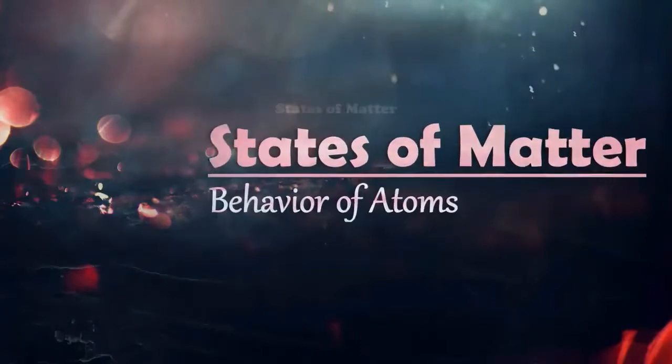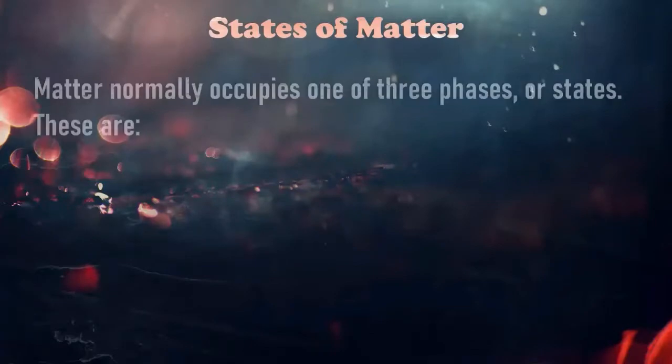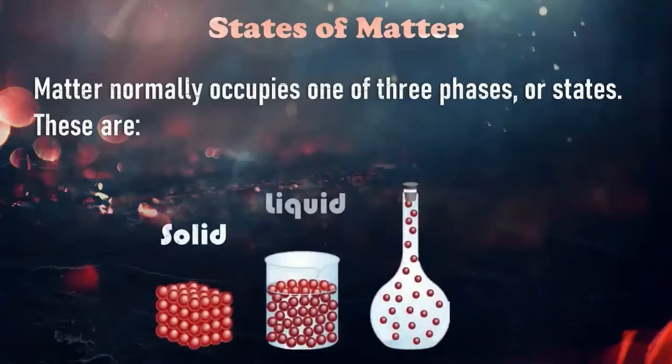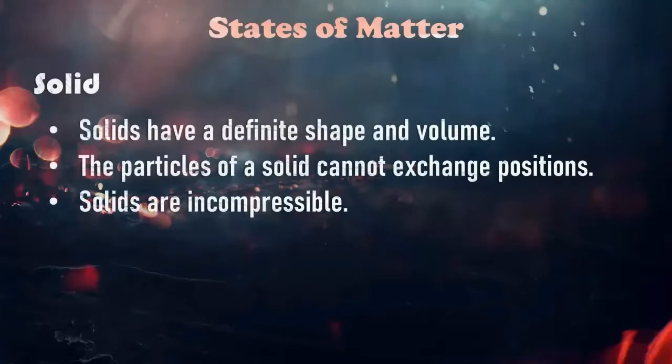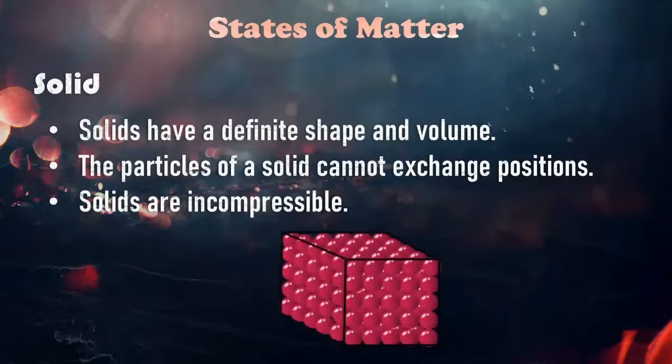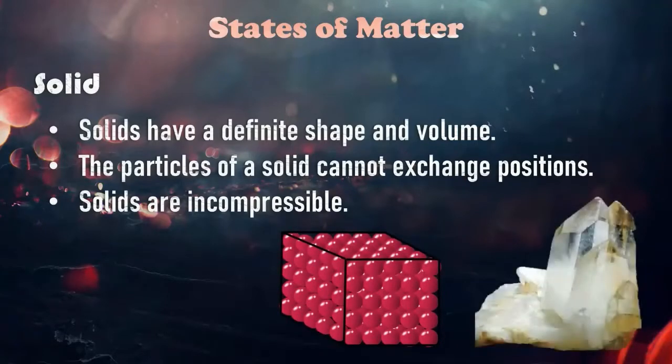Let's talk first about states of matter or the behavior of an atom. Matter normally occupies one of three phases or states: solid, liquid, and gas. The first state of matter is solid. It has a definite shape and volume. The particles of a solid cannot exchange positions, and solids are incompressible. Now observe the behavior of an atom - they are too close from each other. Example: crystal.